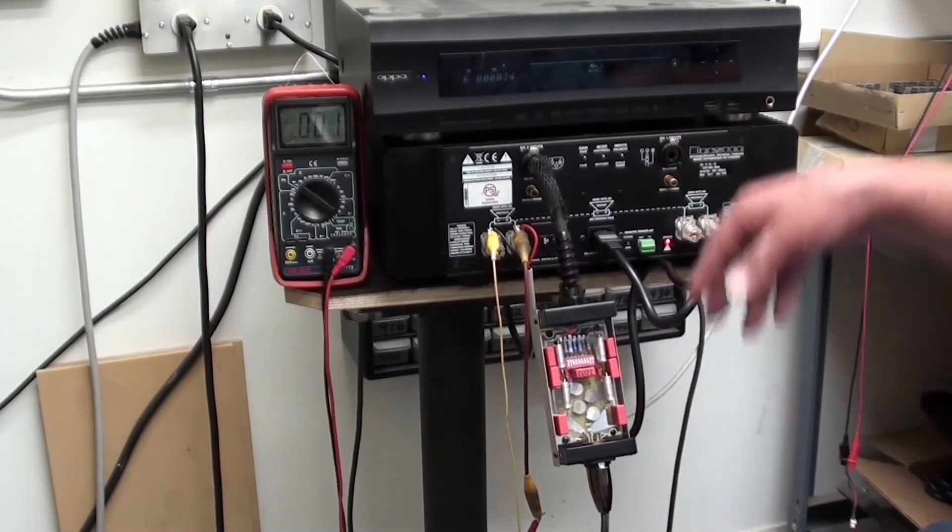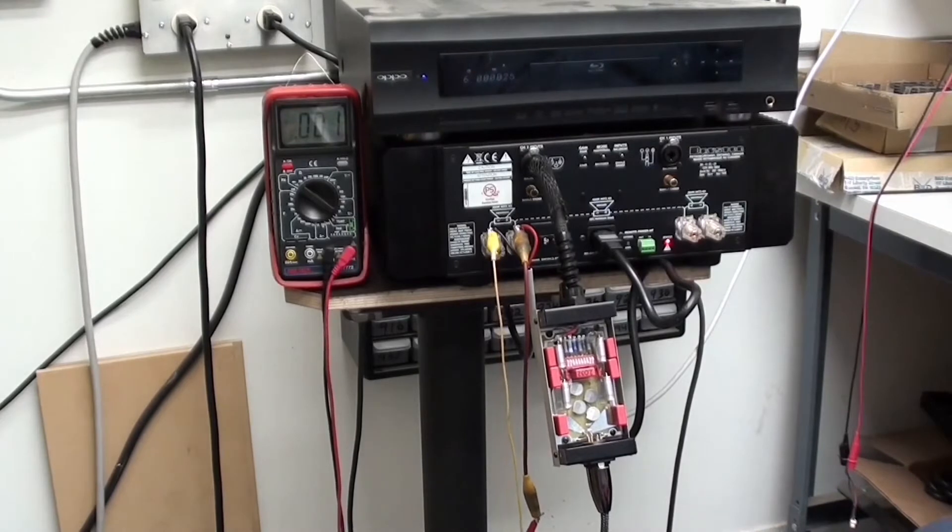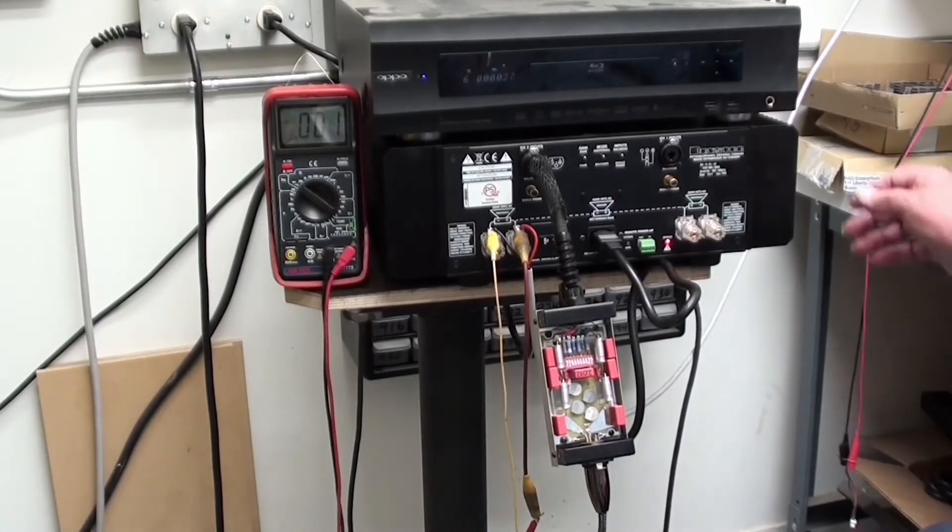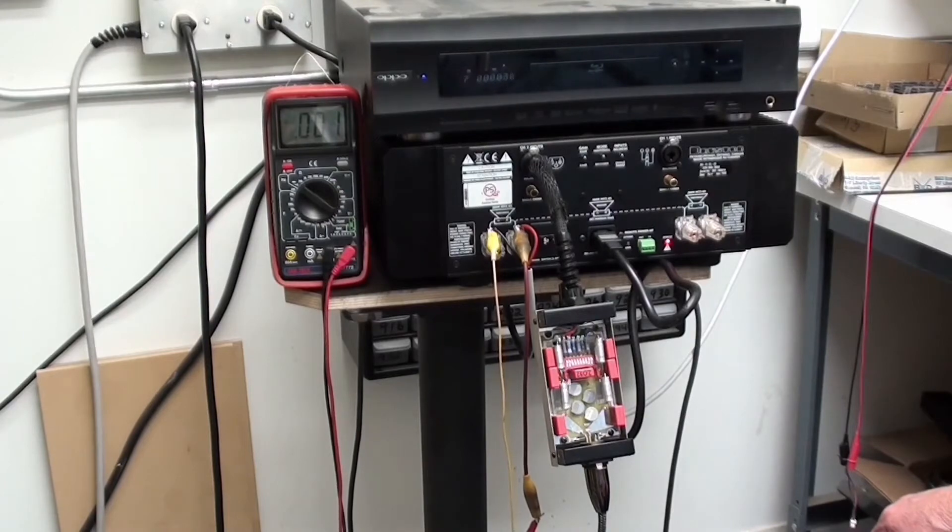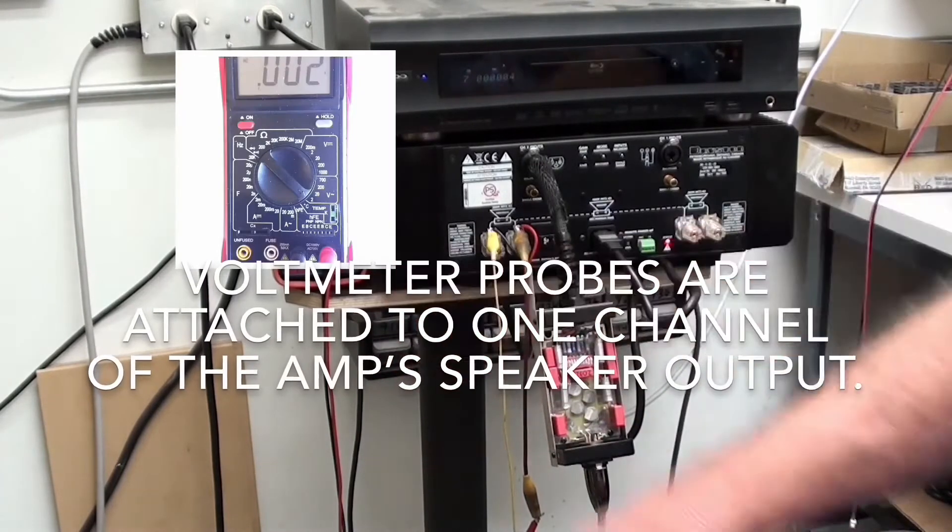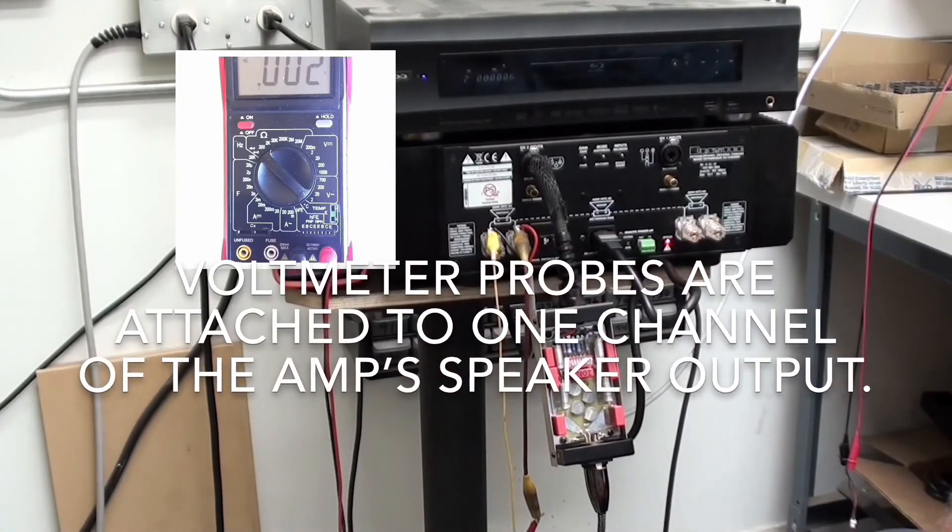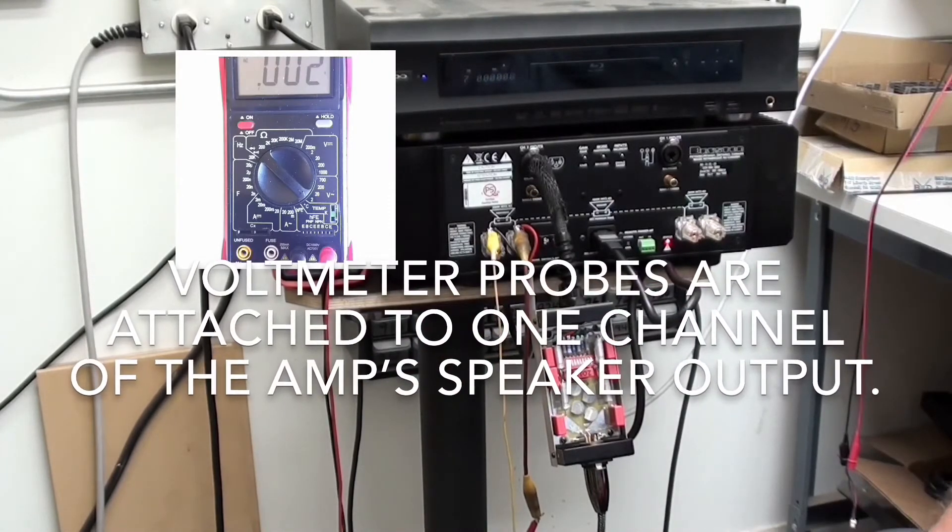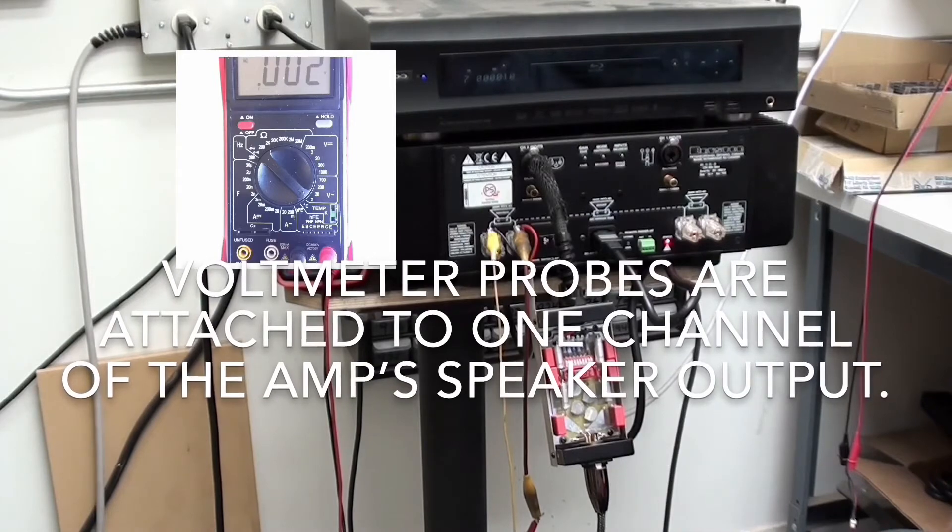So what we need for this: we're using a CD player here with a variable output. We have a Bryston which we're going to verify that its input impedance is correct. We have a digital voltmeter set to 2 volts AC scale. In this case, it's just a Harbor Freight meter.